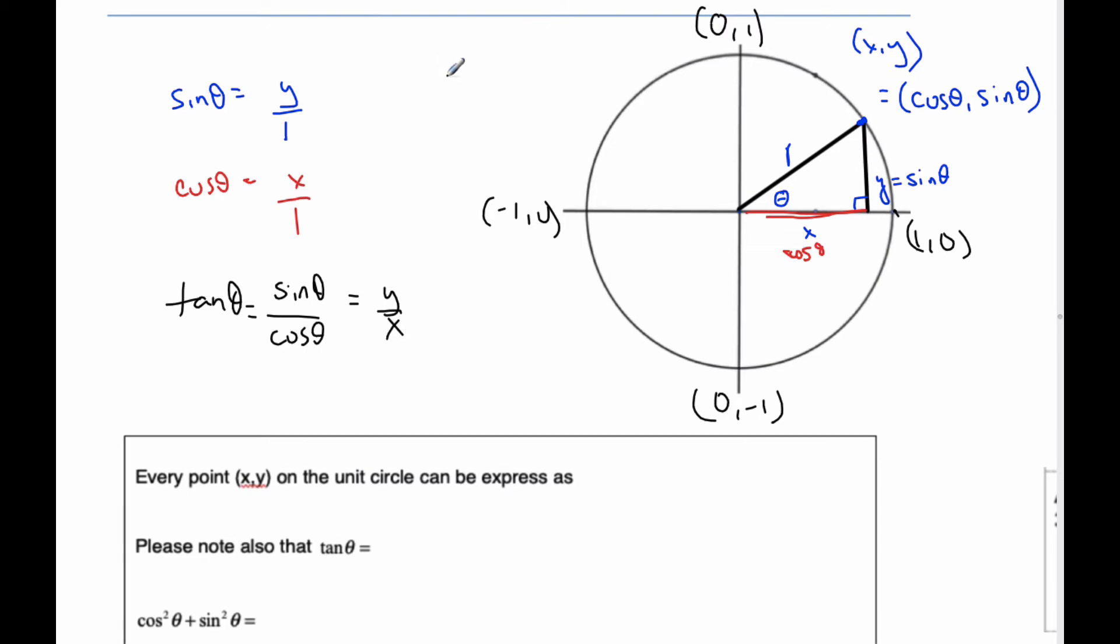And the other one that is also true is you have to recognize that here we have a right triangle. And I know that every single right triangle, the Pythagorean Theorem is true. So I know if I take a squared, which is cosine theta squared, so that means the same as cosine squared theta. It's a shortcut to put the squared there. Plus, so a squared plus b squared, which is going to be sine squared theta.